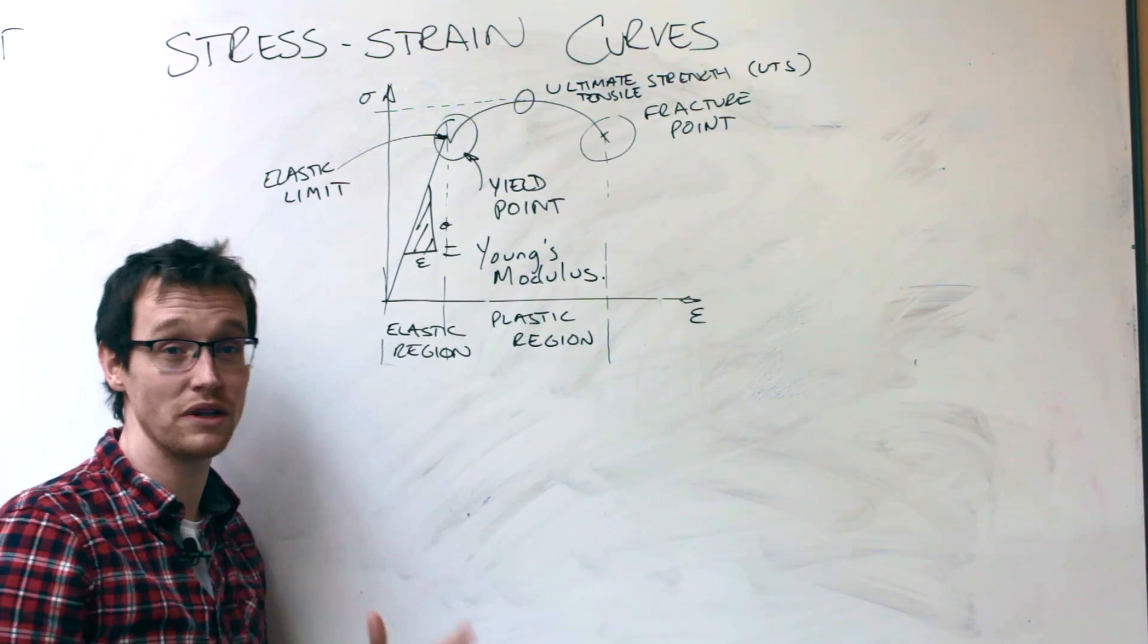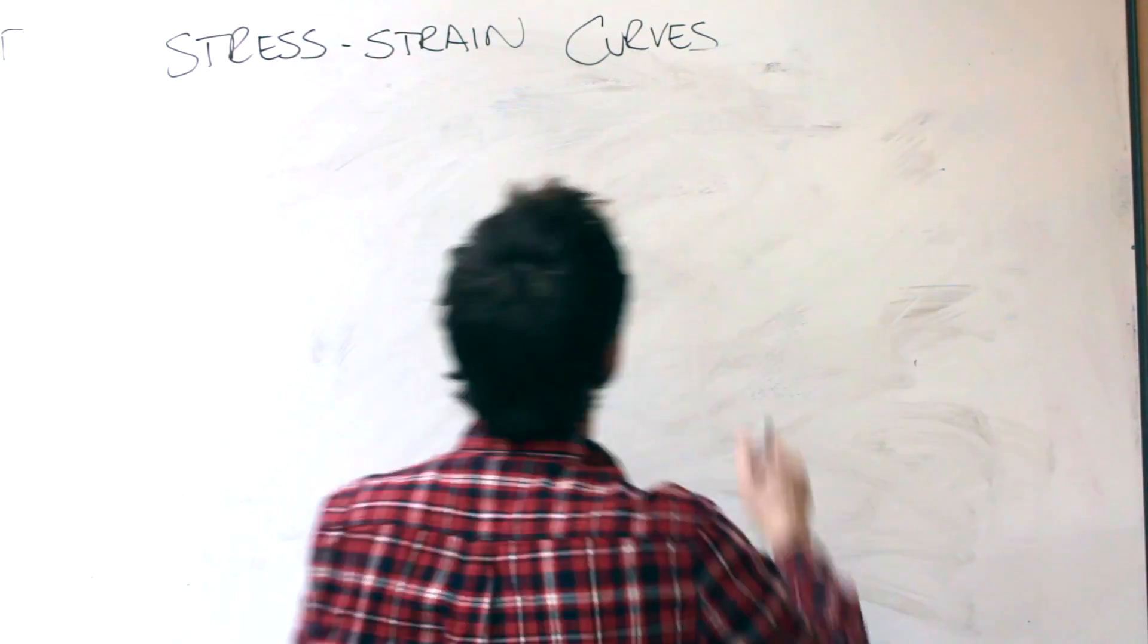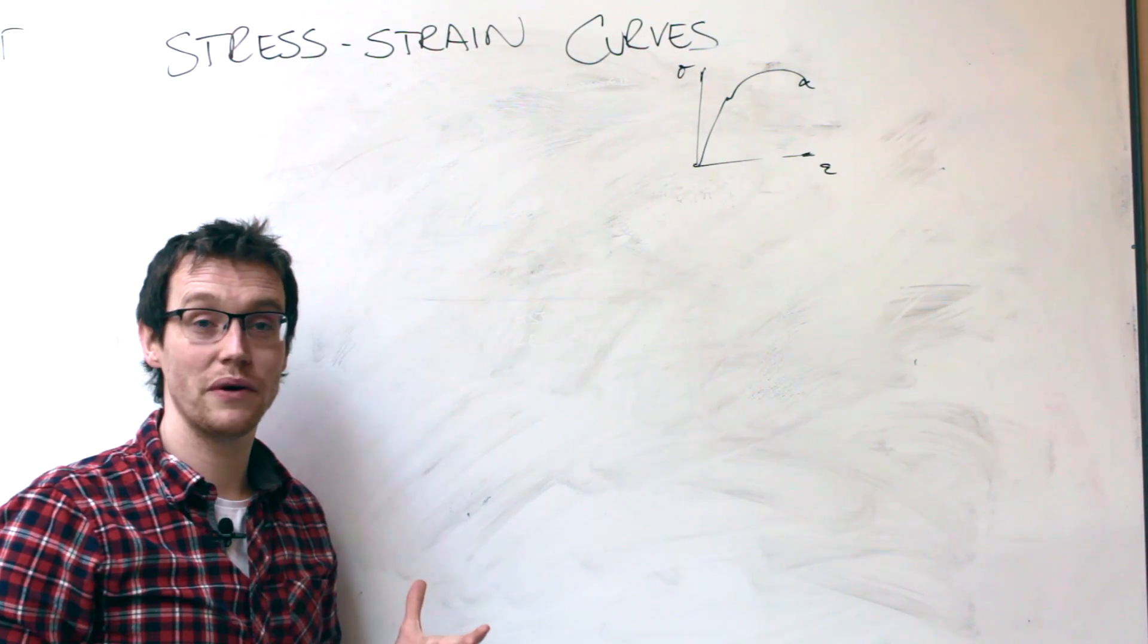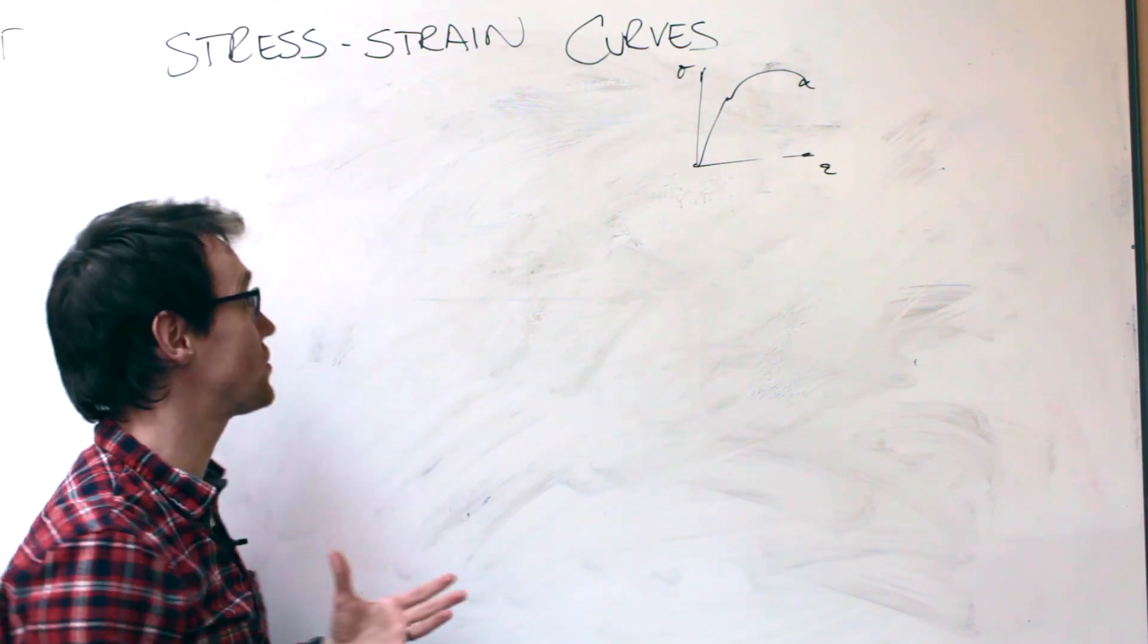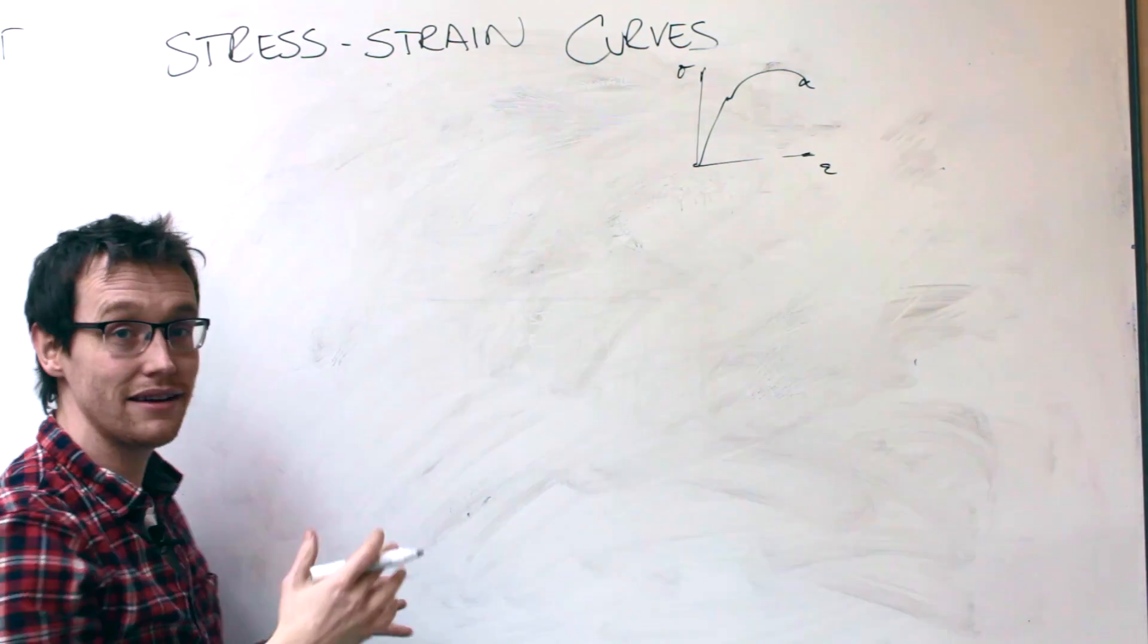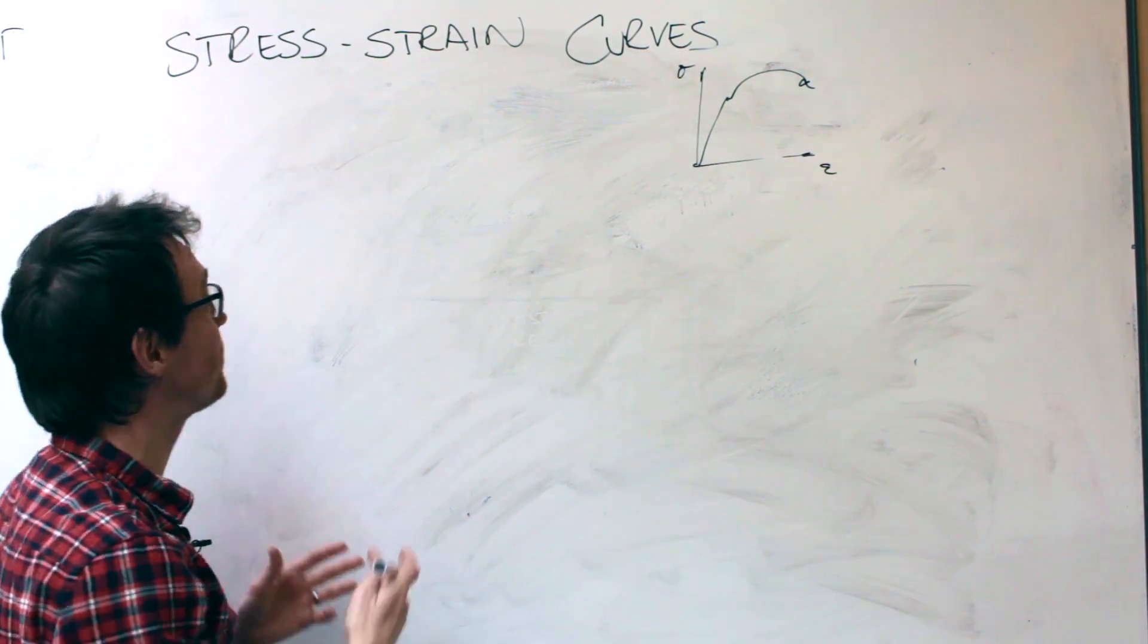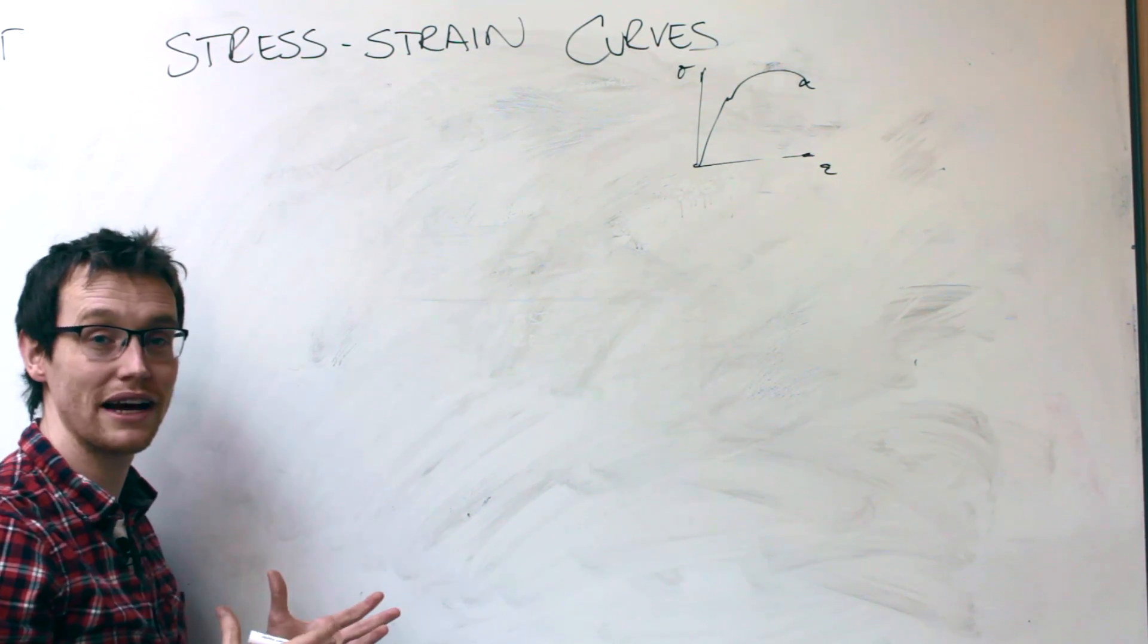So I'm going to rub this off the board. We'll have a look at some key formulae. Okay, so we now know what's going in the stress strain curve. We need to be able to work out some calculations. So key letters and factors that we're going to look at.